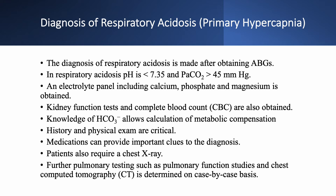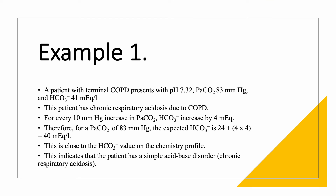Example 1: A patient with terminal COPD presents with pH 7.32 (acidemia), PaCO2 83 (respiratory acidosis), and bicarbonate 41 (chronic respiratory acidosis). Calculating compensation: PaCO2 increased by 40 from normal (40), giving 4 × 4 = 16, so expected bicarbonate is 24 + 16 = 40. The actual bicarbonate is 41 — very close. Therefore, the patient has a simple compensated acid-base disorder: chronic respiratory acidosis.